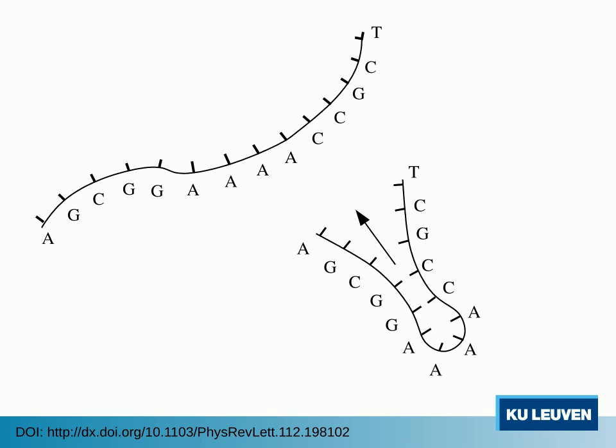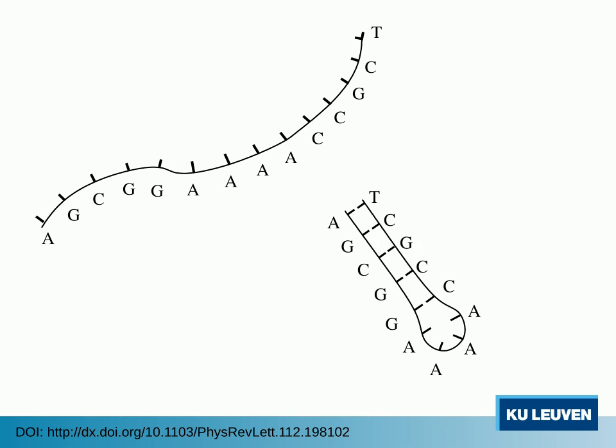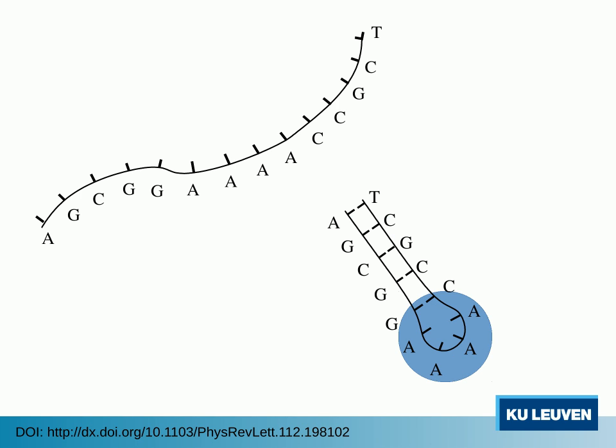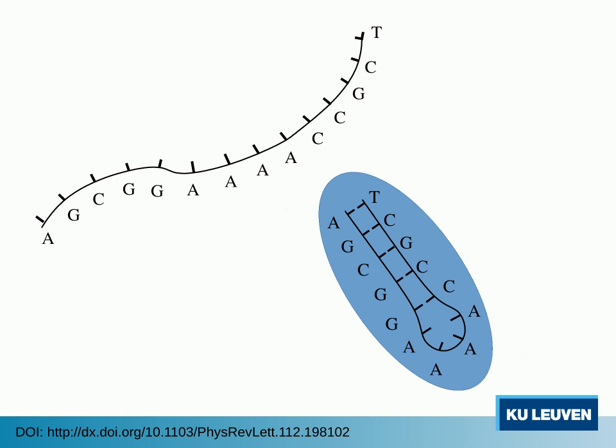Subsequently, the remaining bases rapidly close up like a zipper. The final conformation is a double helix ending in a single-stranded loop. This shape is known as a DNA hairpin.